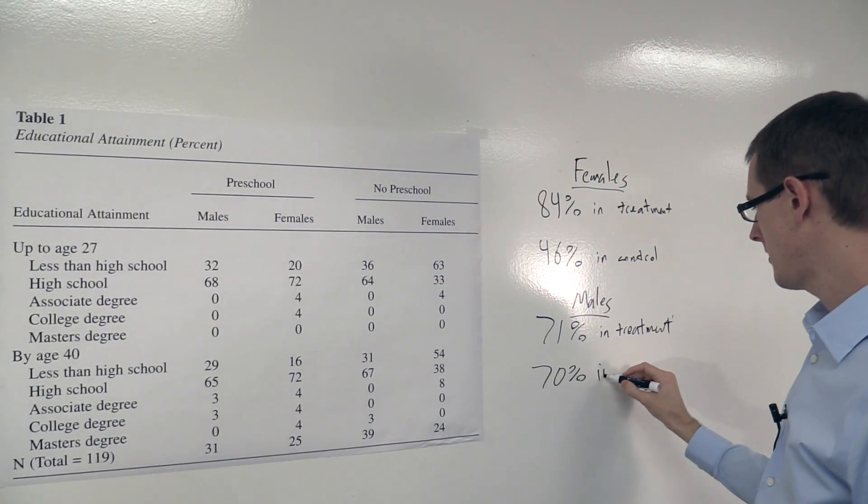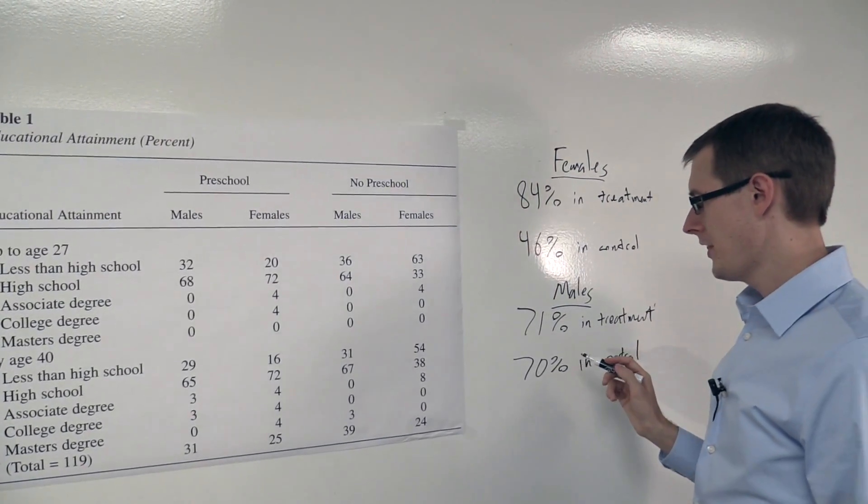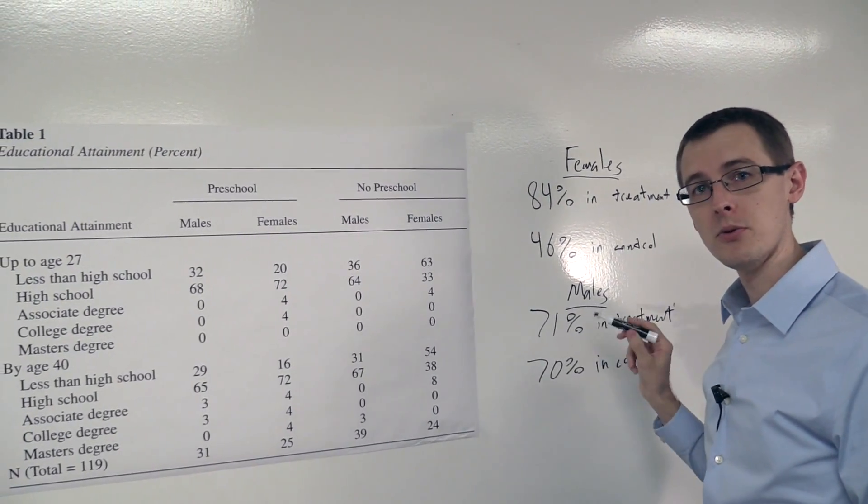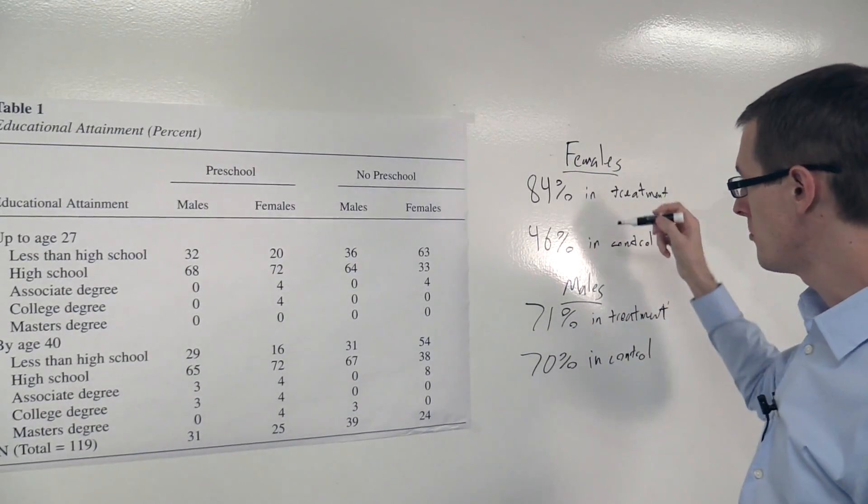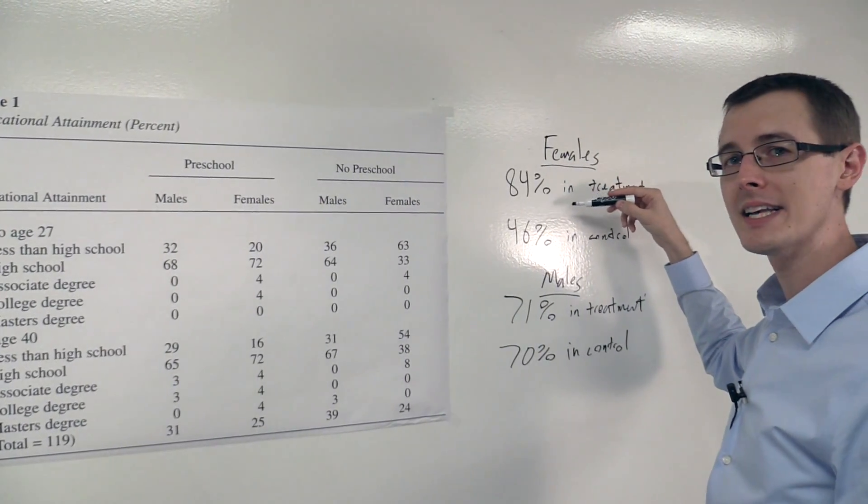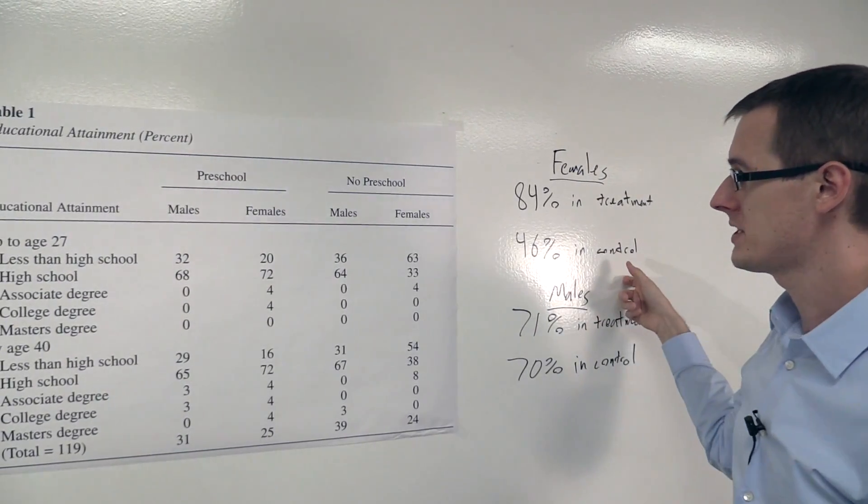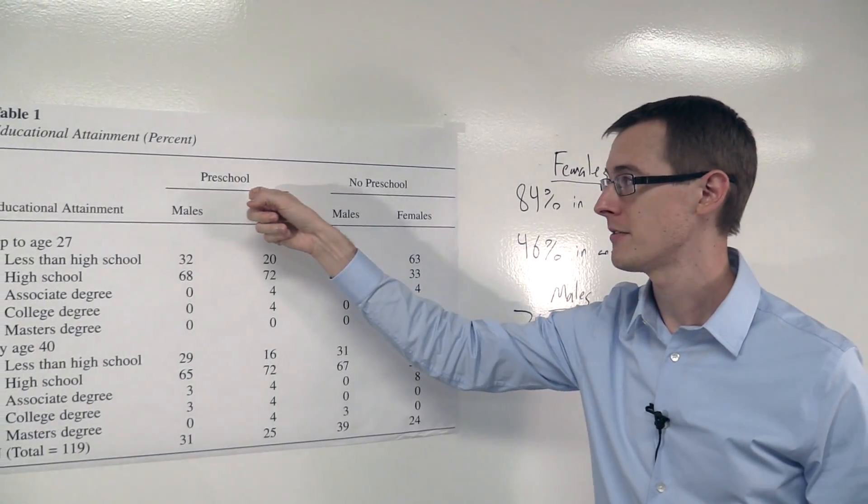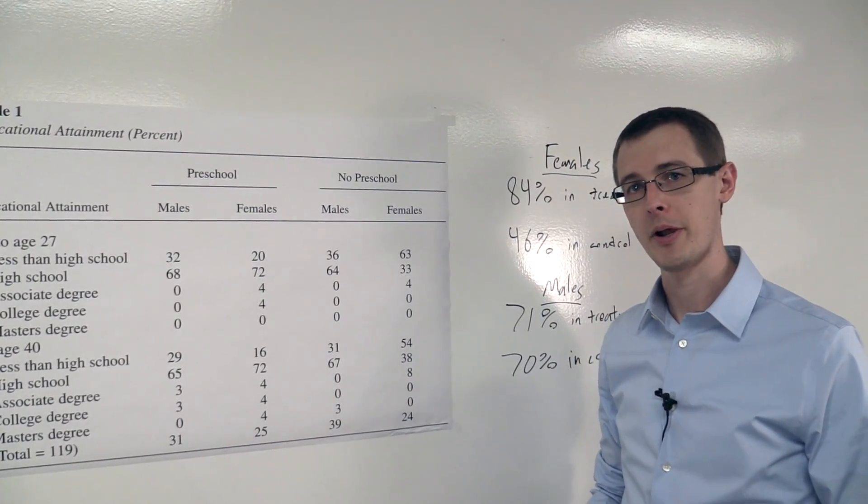So here it looks like there is no effect of preschool on having at least a high school education for males, but there's a very large positive effect for females. That's one of the main findings we see of the effect of getting preschool on educational attainment from the Perry Preschool Project.